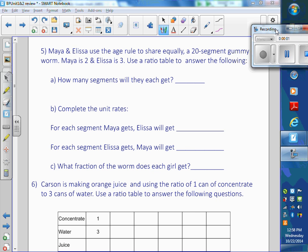Maya and Alyssa use the age rule, and that comes from your math book, to share equally a 20-segment gummy worm. That word 'equally' shouldn't be in there. Can you cross that out? Because it's the age rule. That's a typo.